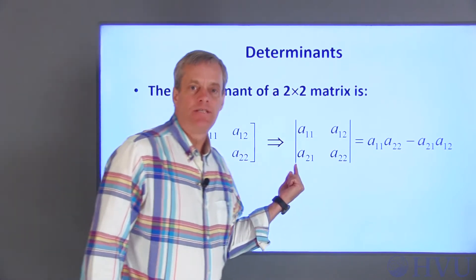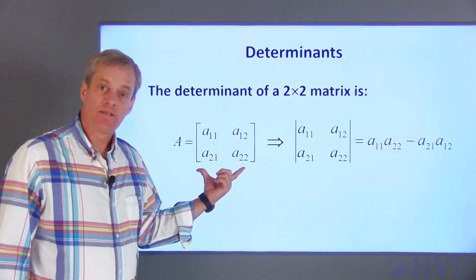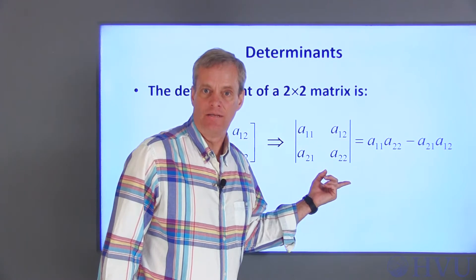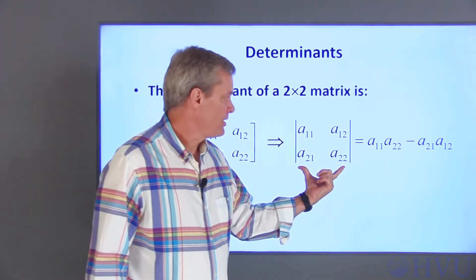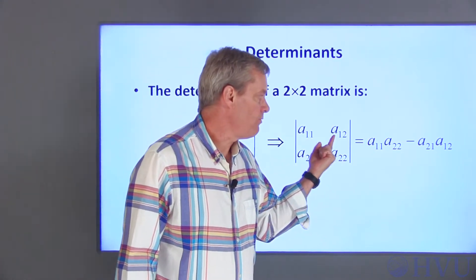Determinants are indicated by placing the elements of the matrix within vertical bars. If A is a 2x2 matrix with these elements, its determinant is the product of the diagonal elements minus the product of the off-diagonal elements. So the determinant of A is A11 times A22 minus A21 times A12.